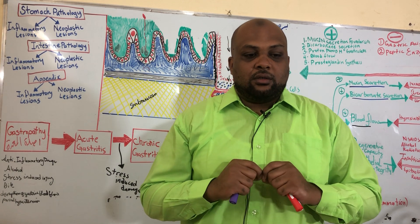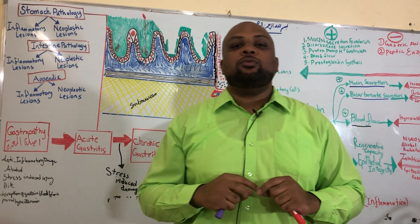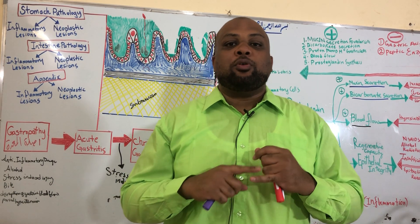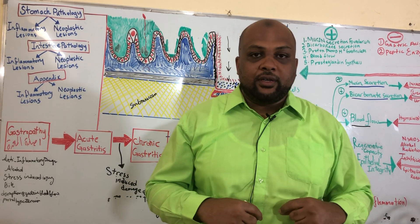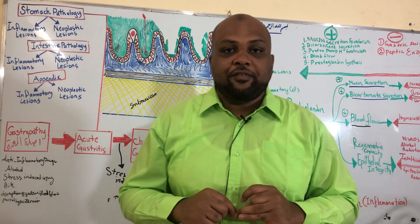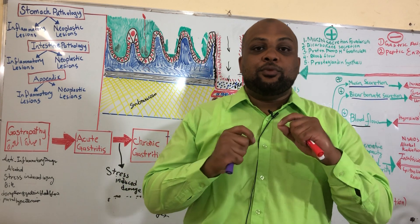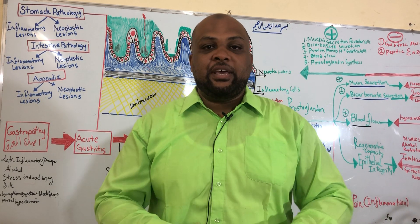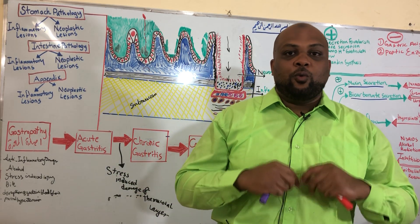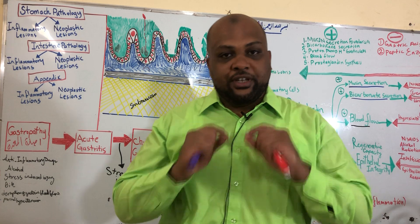In autoimmune chronic gastritis, the immune system mounts an antibody response targeted against parietal cells of the stomach and against the product of parietal cells known as intrinsic factor. Intrinsic factor is very important for the absorption of vitamin B12.